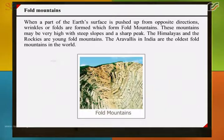When a part of the earth's surface is pushed up from opposite directions, wrinkles or folds are formed which create fold mountains. These mountains may be very high with steep slopes and a sharp peak. The Himalayas and the Rockies are young fold mountains. The Aravallis in India are the oldest fold mountains in the world.